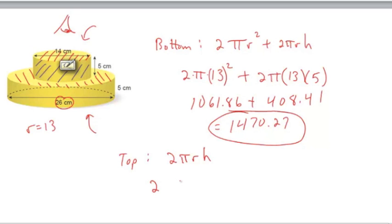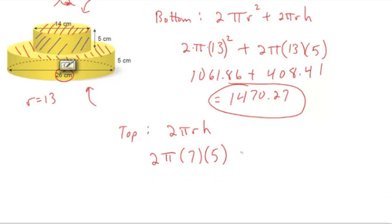The radius of the top cylinder is 14 divided by 2, or 7, and the height of that is 5. And if we do that 2π times 7 times 5, we should get a value of 219.91. Make sure to check that in your calculator.